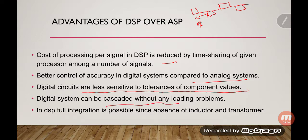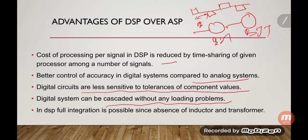Digital systems can be cascaded without any loading problems. In analog circuits, if you cascade two BJTs, the final gain will not be exactly equal to the multiplication of individual gains because there will be a loading effect of transistor two on transistor one. But in digital circuits this condition does not apply.